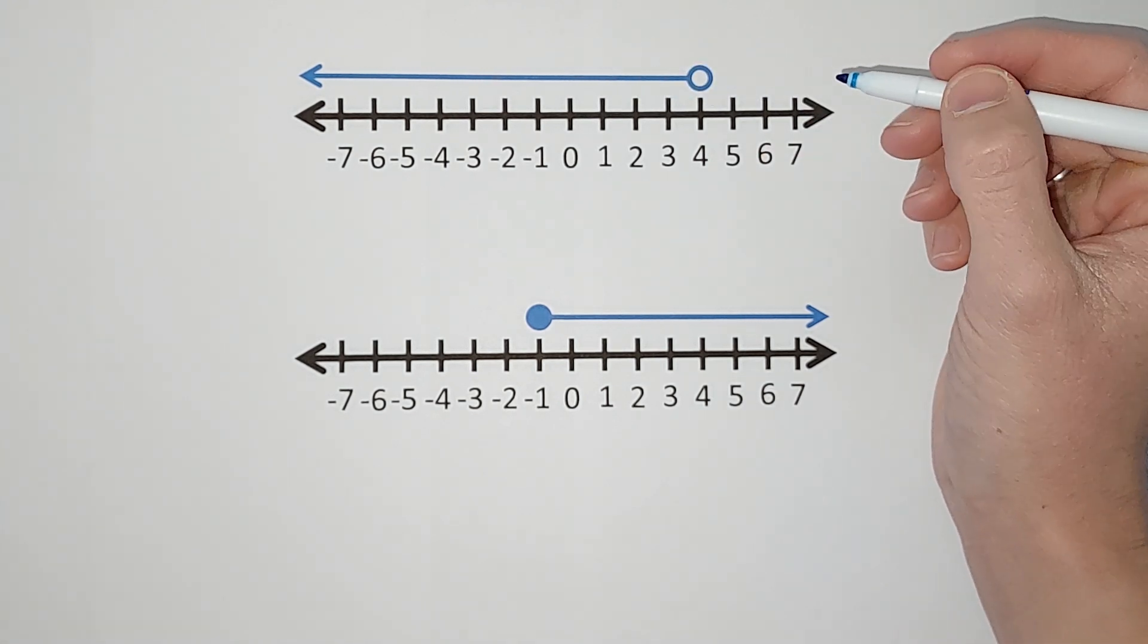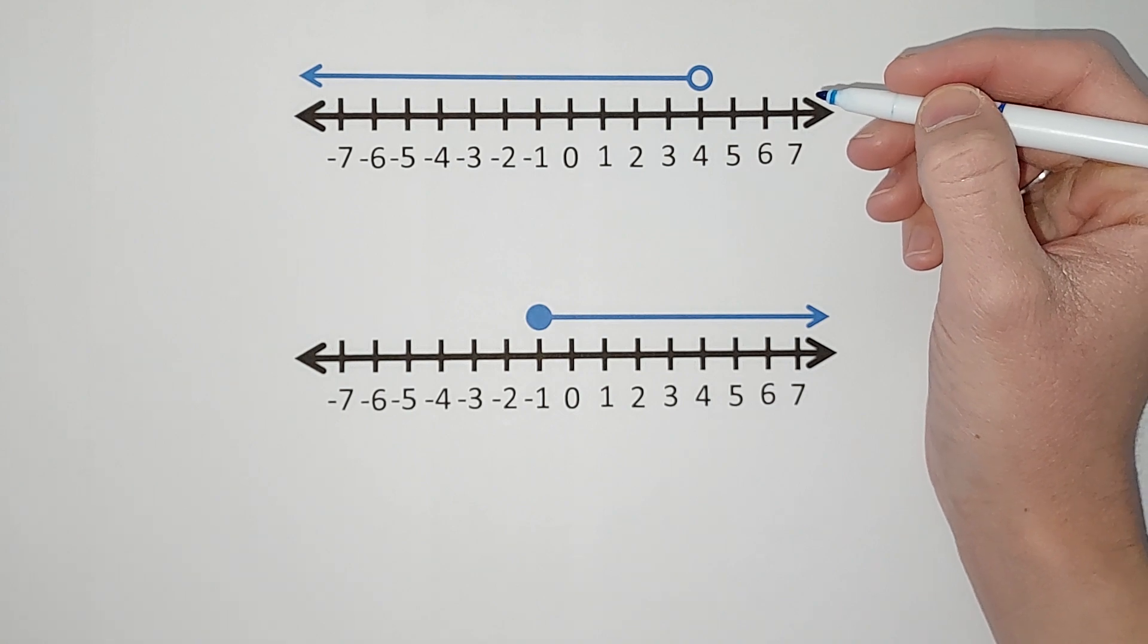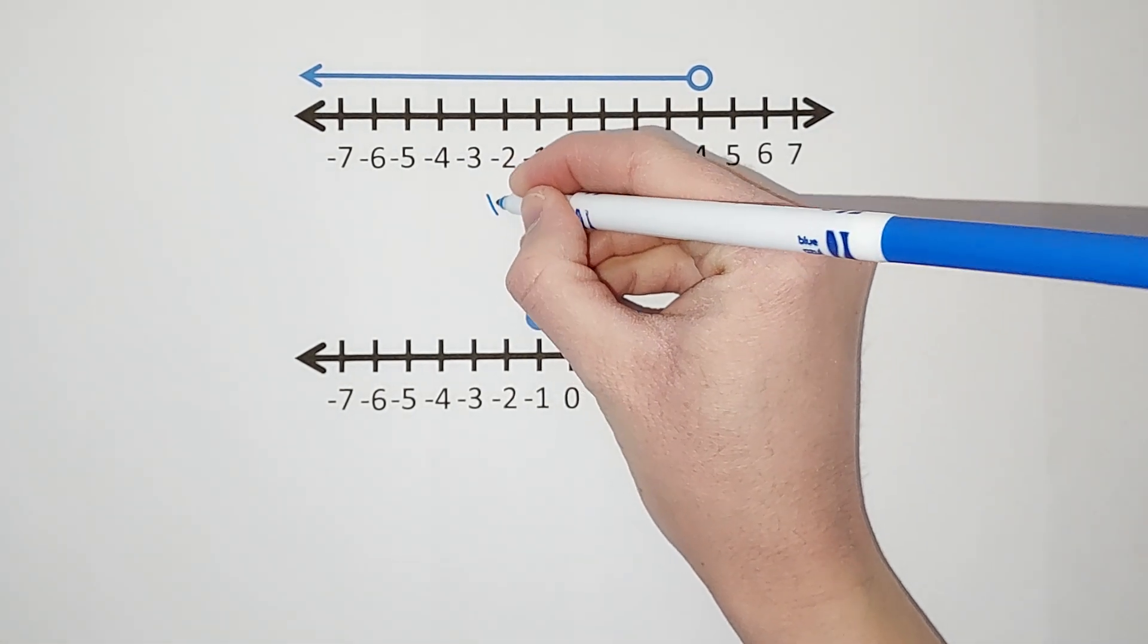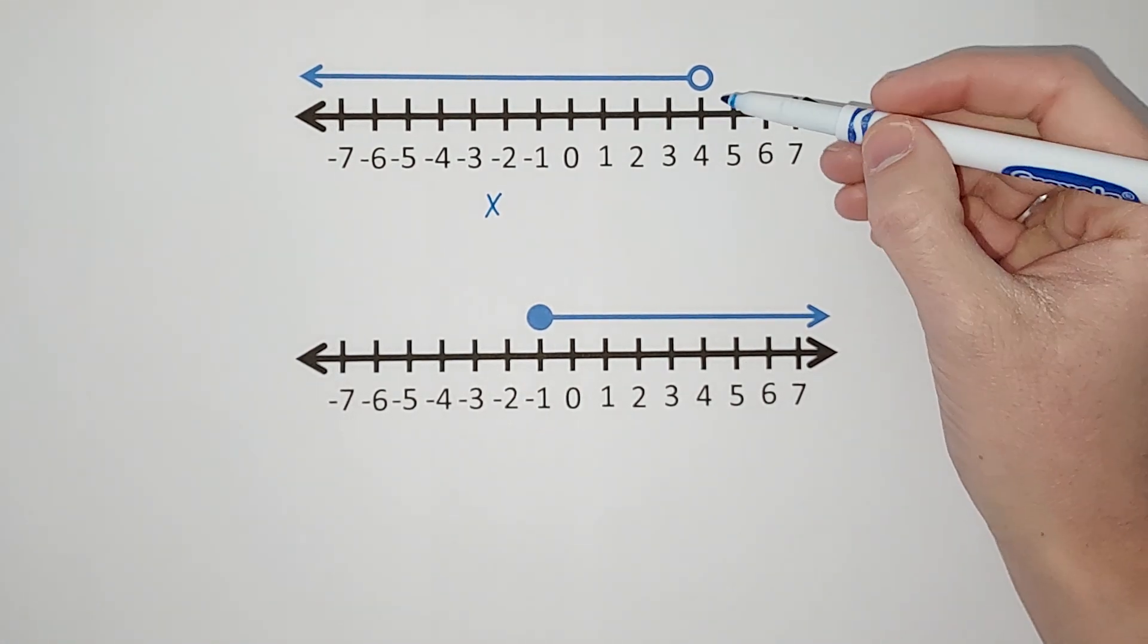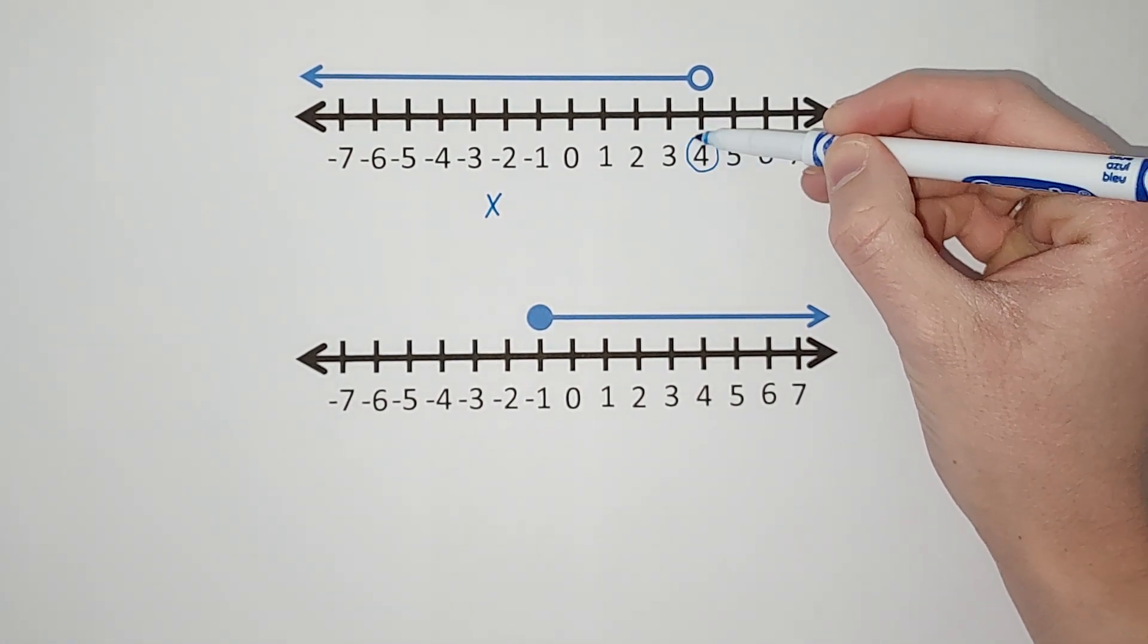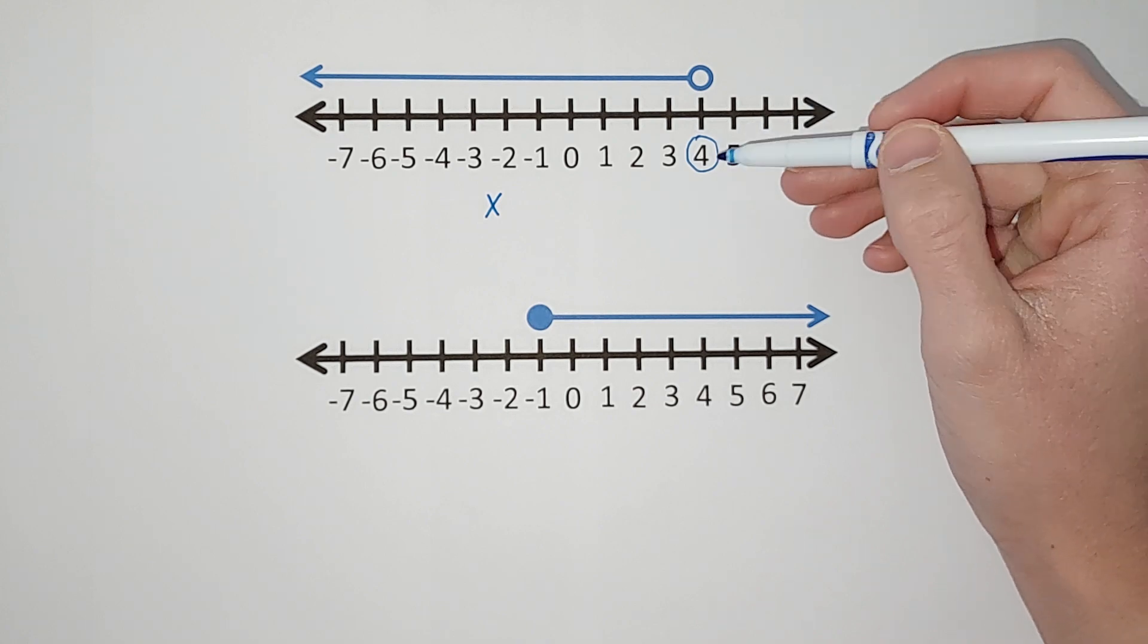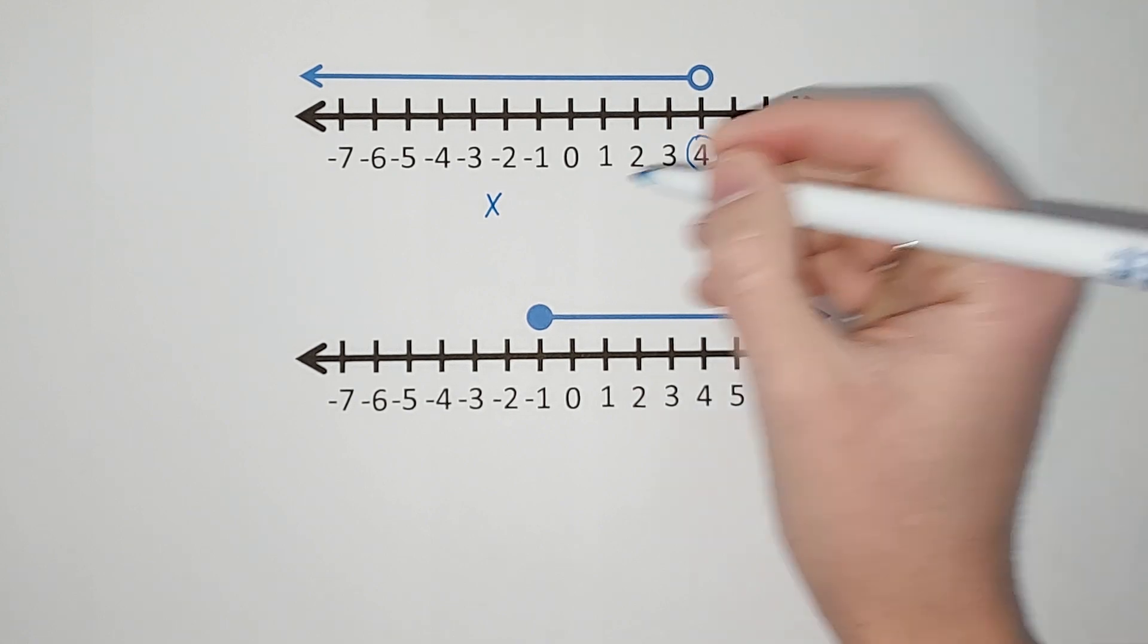Okay, so we're gonna start out just with a variable, you can pick whatever you want. For some reason in math we just like x, it's our favorite. So we're gonna have x, and then we know 4 is of some significance here right, because that is where my open circle is.